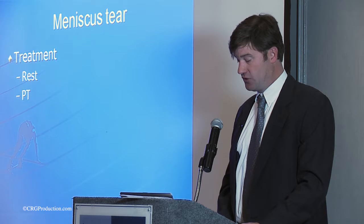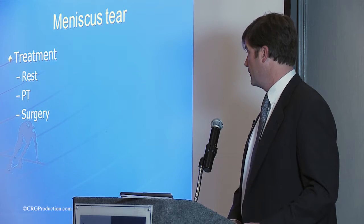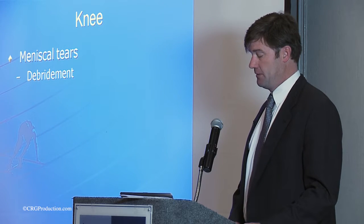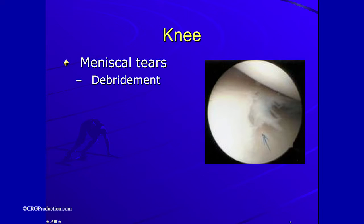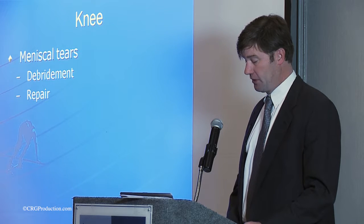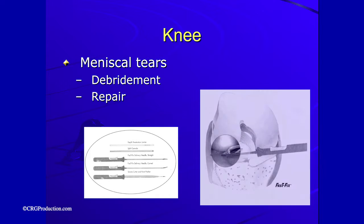Treatments for stable tears include rest and physical therapy, which usually resolves symptoms. If the tear is unstable or becomes unstable, surgery is necessary. By far the majority are debrided — you remove the torn piece, taking out the pebble from the shoe. Repairs are more common in younger patients, and the indications are improving with newer technologies. We're now using arthroscopic devices — little anchors with sutures through tiny portals — with success rates as good as open procedures.